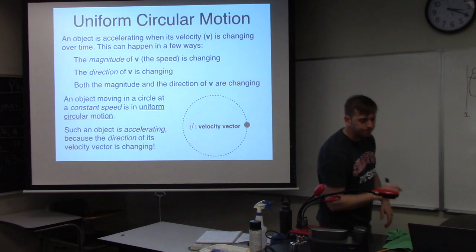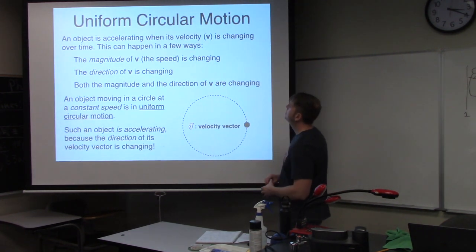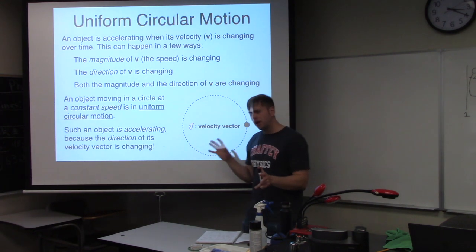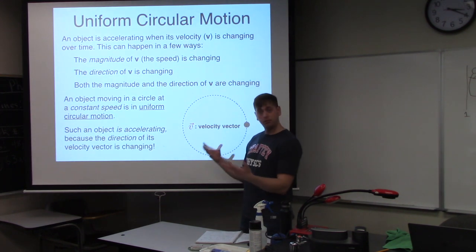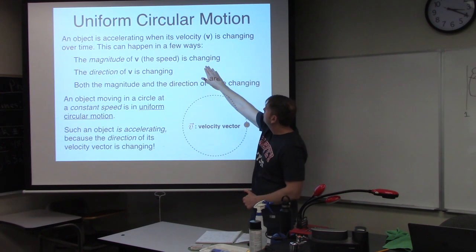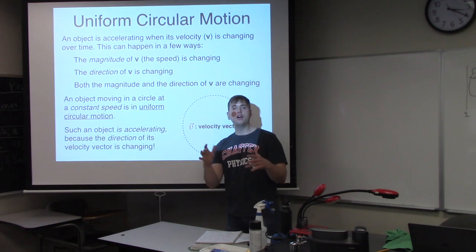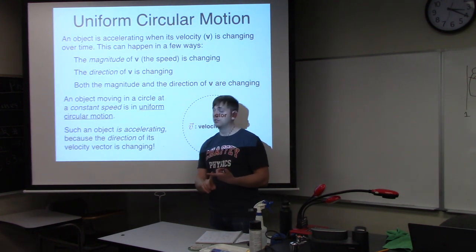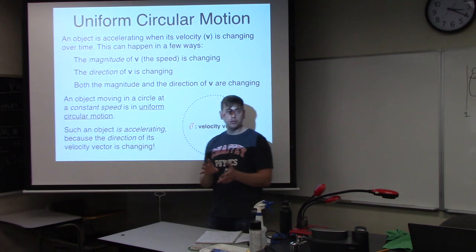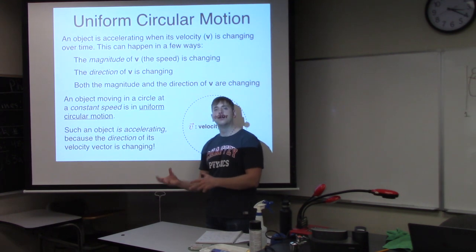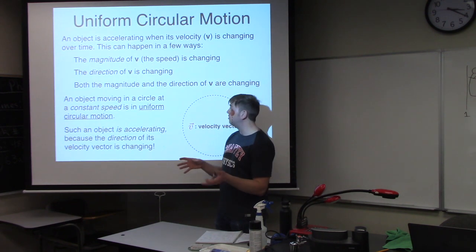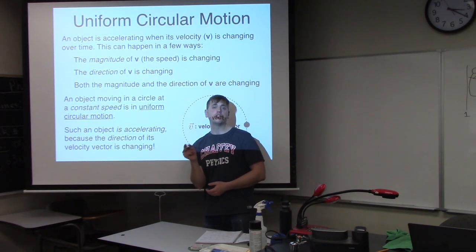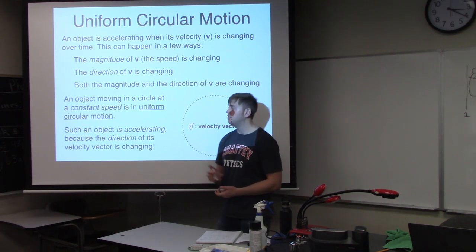For uniform circular motion — an object moving in a circle at a constant speed — an object accelerates when its velocity v is changing over time. One way velocity changes is if its magnitude (the speed) changes: speeding up or slowing down. But even if the magnitude stays the same, the direction of v can change, and since v is a vector, that still counts as acceleration. In uniform circular motion the speed is constant but the direction keeps changing.